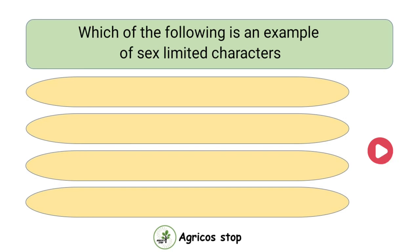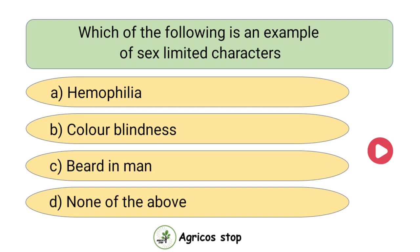Which of the following is an example of sex limited characters? Options are hemophilia, colorblindness, beard in man, and none of the above. The answer is beard in man. Beard in man is an example of sex limited characters.